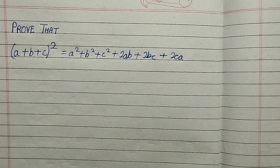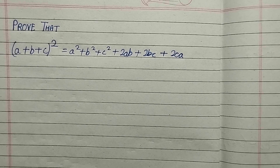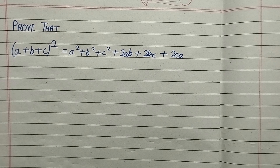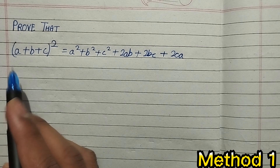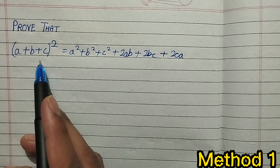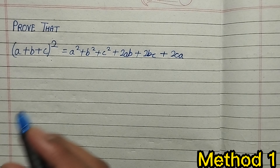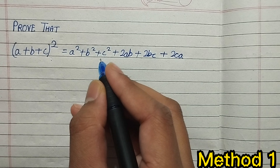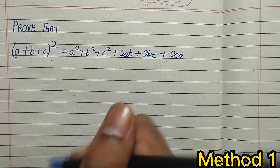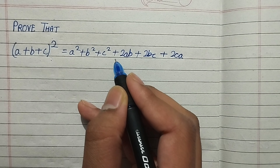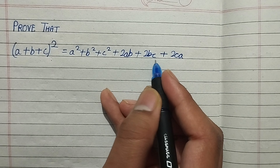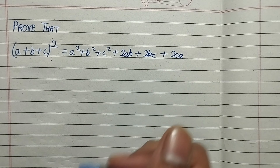Welcome to Study Notes. In the previous videos, we have proved some important identities. In this video, we are going to prove another important identity: (a + b + c)² which equals a² + b² + c² + 2ab + 2bc + 2ca.